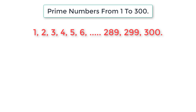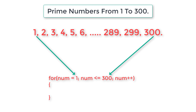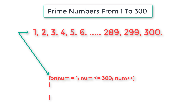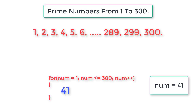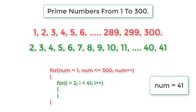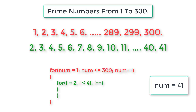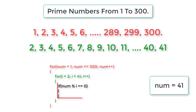The outer for loop selects numbers from 1 to 300. Consider a random number, 41, which is a prime number. We need to determine if 41 is prime or not. We write a nested inner for loop, initializing i to 2 and iterating until i is less than 41, that is until i equals 40. We check the condition: if num modulo i equals 0, that selected number is not a prime number. If num modulo i is not equal to 0, then that number is a prime number.